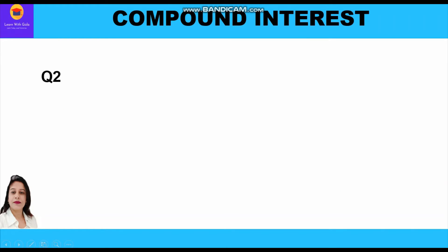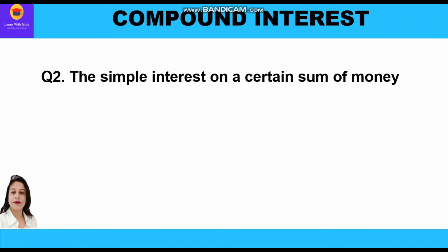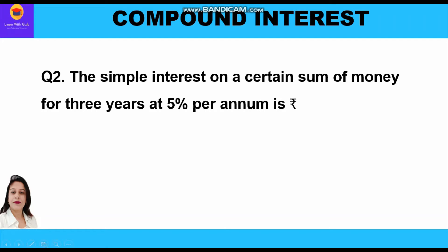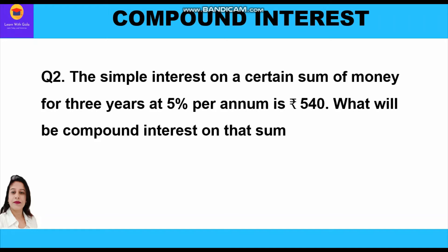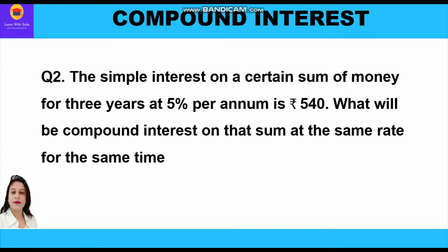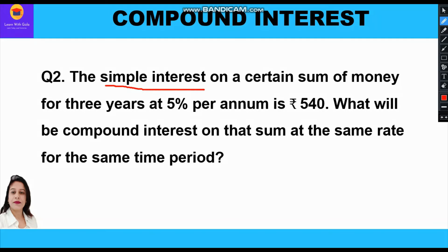Now let us move to the second question. The simple interest on a certain sum of money for three years at five percent per annum is rupees 540. What will be the compound interest on that sum at the same rate and for the same time period? This question follows the same approach as question one.